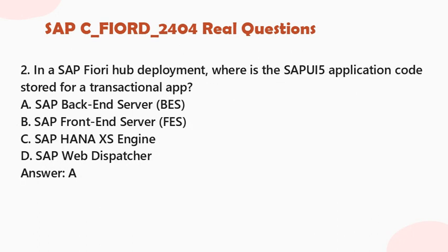Question 2: In a SAP Fiori hub deployment, where is the SAPUI5 application code stored for a transactional app? A. SAP back-end server (BES). B. SAP front-end server (FES). C. SAP HANA XS engine. D. SAP web dispatcher. Answer: A.